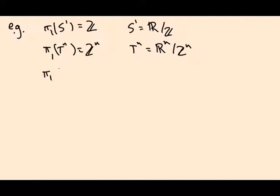It tells you that π₁ of RP^n is Z mod 2 because RP^n is the sphere, the n-sphere over the cyclic group of order 2.